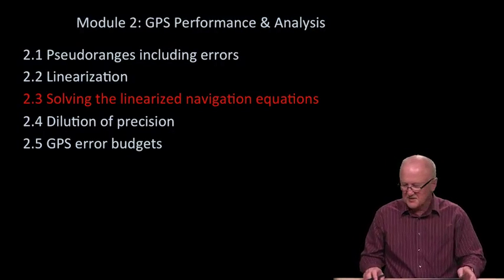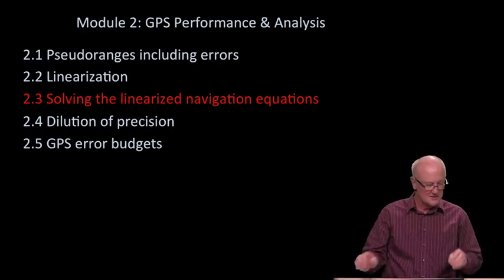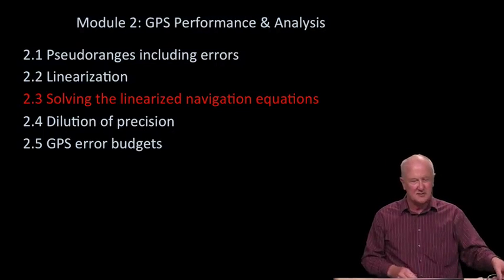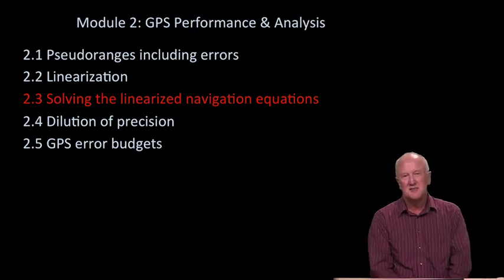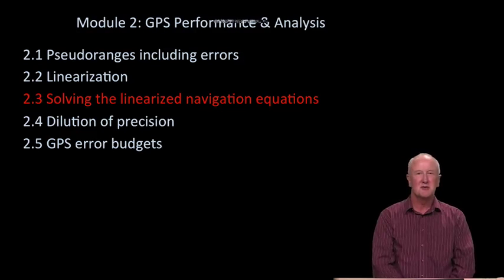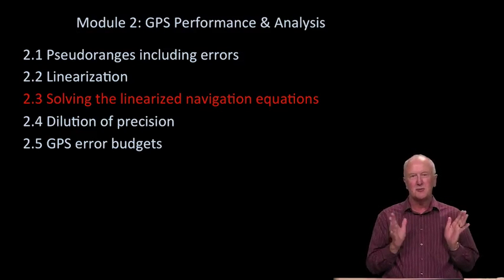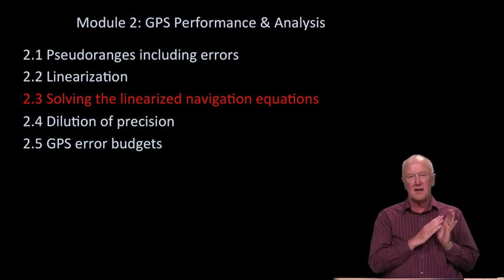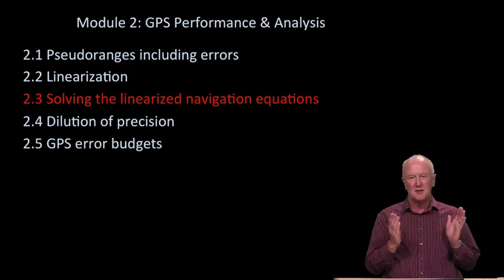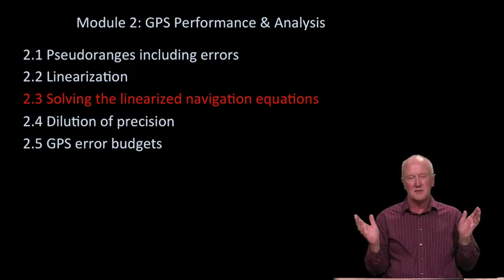Welcome back. Last time we linearized the GPS navigation equation. We linearized the pseudo ranges. In other words, we figured out how to treat the fact that the estimanda x_u, y_u, z_u appear squared and underneath the square root.